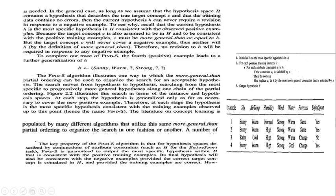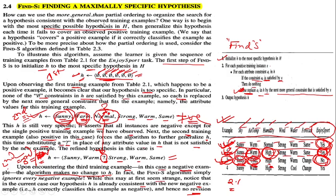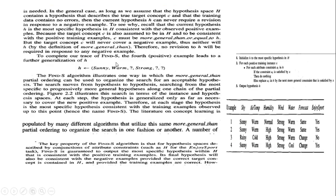No revision is needed in the general case, as long as we assume the hypothesis space H contains a hypothesis that describes the true target concept c and the training data contains no errors. The current hypothesis H can never require a revision in response to a negative example. So we keep the third hypothesis the same as the second. Now let us go to the fourth instance.